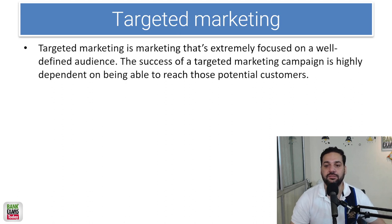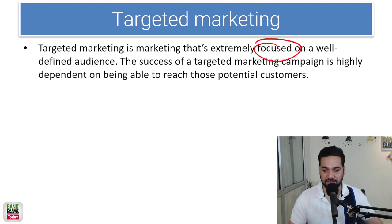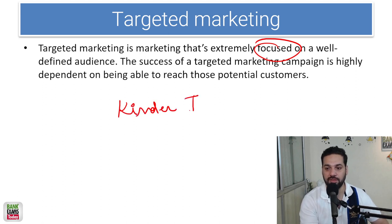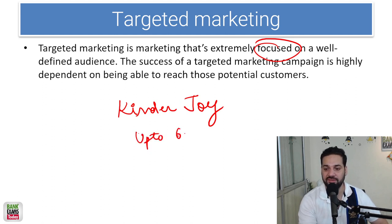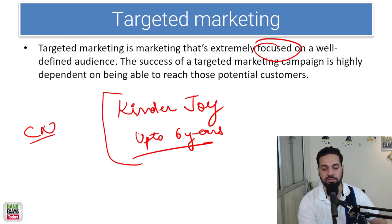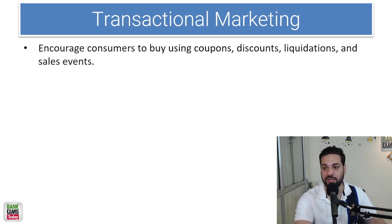Targeted marketing is marketing that is extremely focused on a well-defined audience. For example, Kinder Joy — they are targeting kids up to the age of six years, and their marketing is very targeted. They place advertisements on Cartoon Network because they know exactly where to pitch their products. That is targeted marketing.